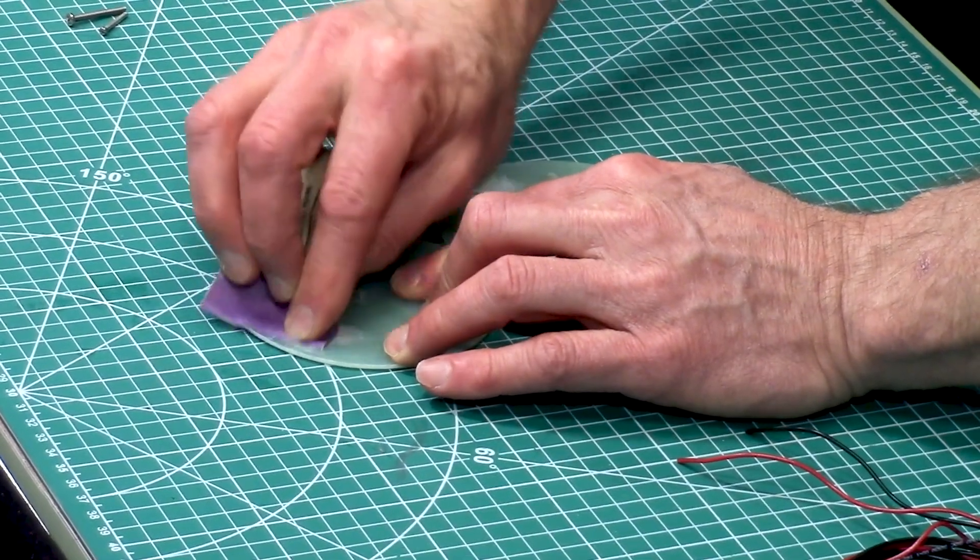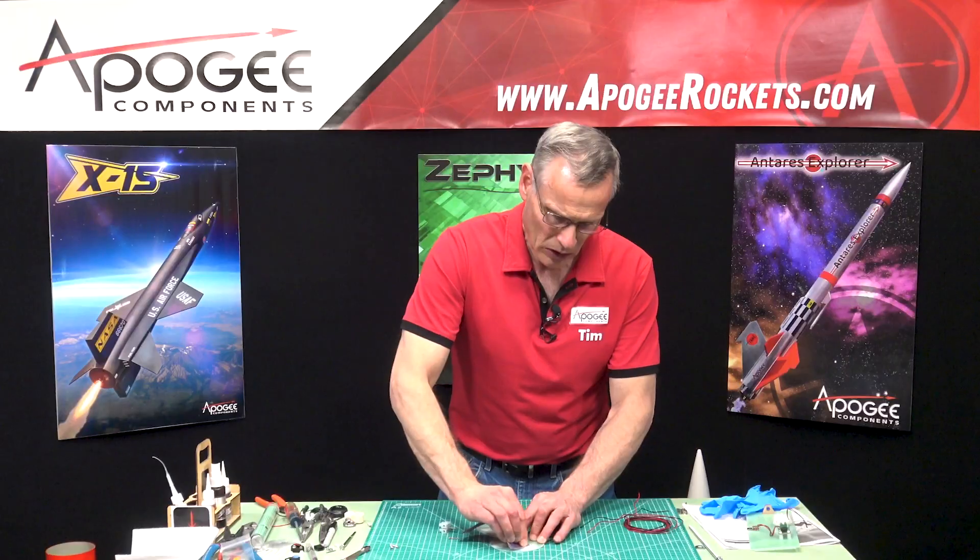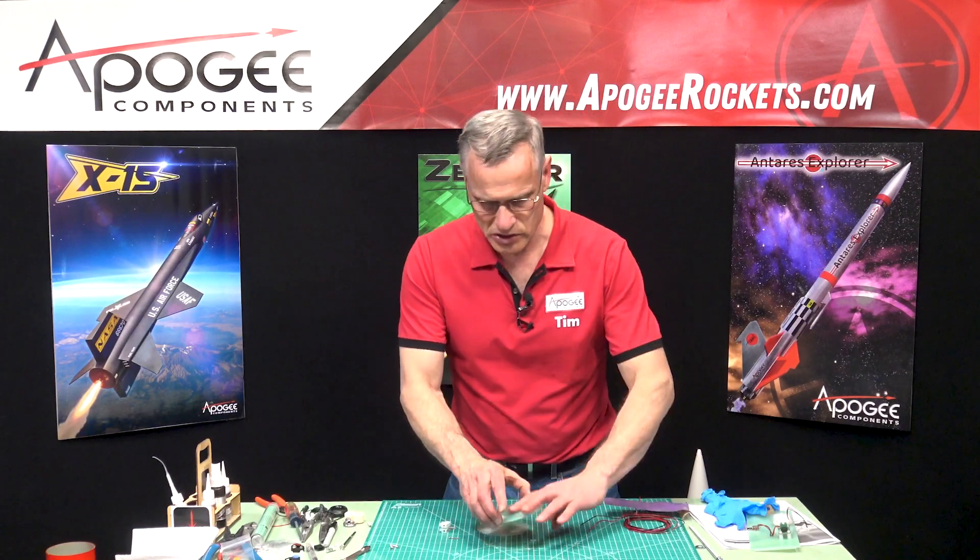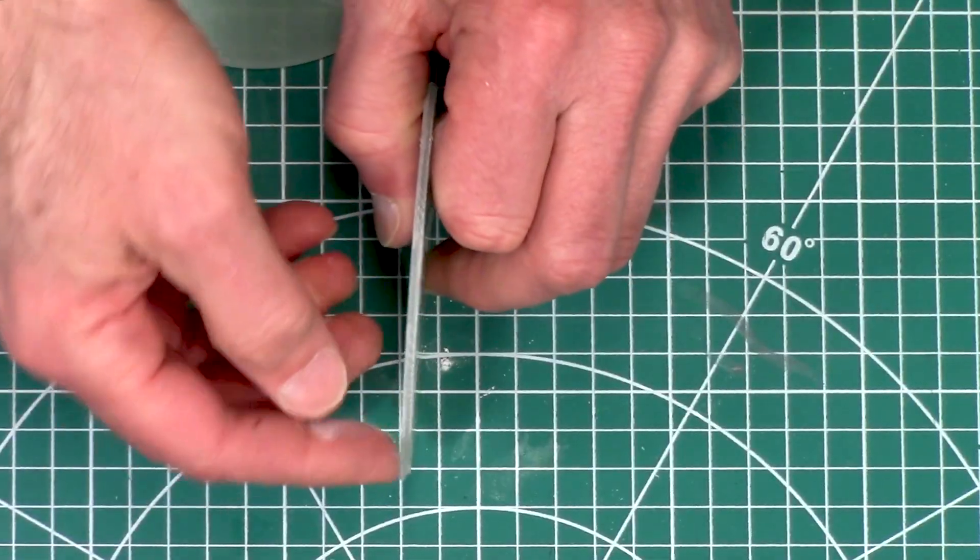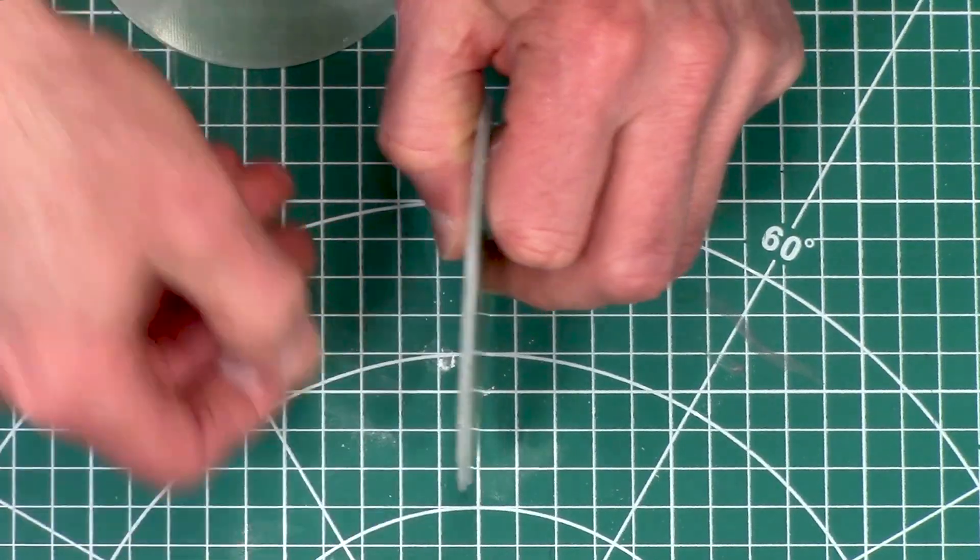Now this is the outside of the bulkhead. You can tell which is the outside and which is the inside because the outside has this little edge on it.